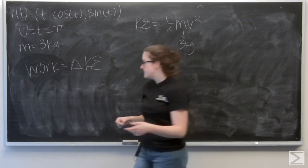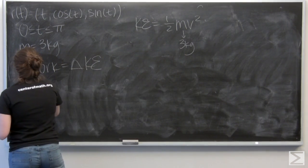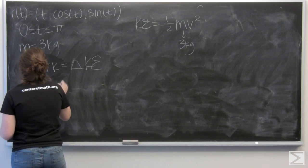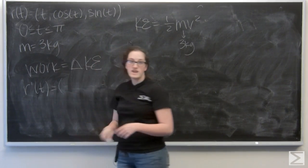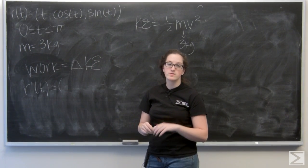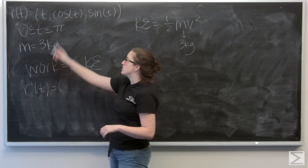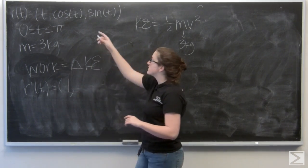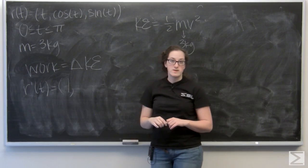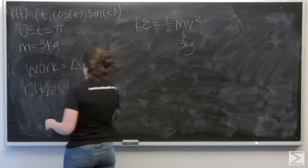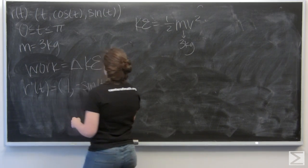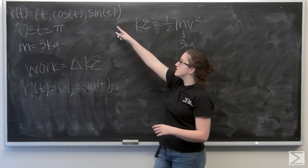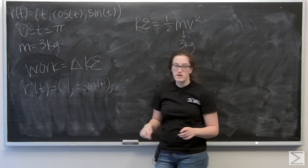So, r prime of t. I get r prime by taking the derivative of each of the components with respect to t. So, the derivative of t is going to be one. The derivative of cosine of t is going to be negative sine of t. And the derivative of sine of t is going to be cosine of t.